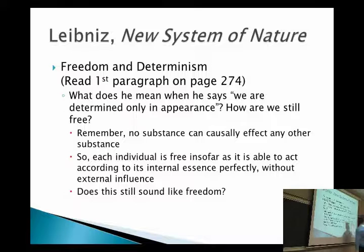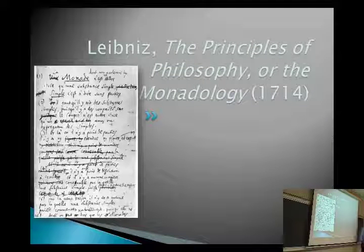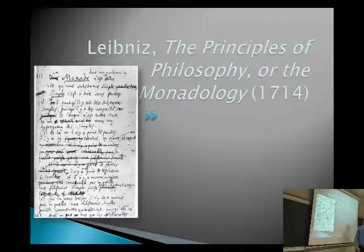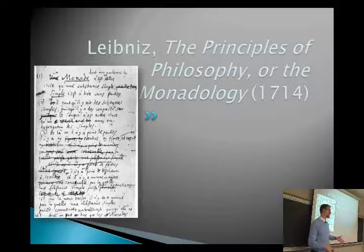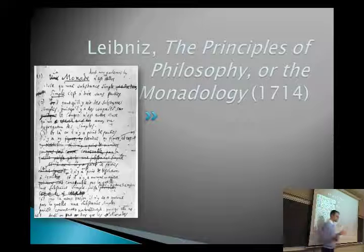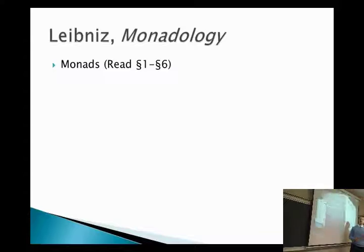We're going to move on to the big book, the Monadology. We have a piece of handwritten material from it — it's pretty cool. This is about 20 years after the last reading we went over. The Monadology is usually thought of, at least of the writings we have from him, as the most systematic and complete explanation of his philosophical system, although it is still incomplete in a lot of ways. Let's take a look at the first six sections, starting on page 275.